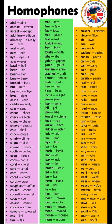Oftentimes homophones come in groups of two, like 'hour' and 'our', but occasionally they can be in groups of three — for example, 'two', 'to', and 'too'. Taking the 'bear' example further, we can add a third word: 'bear' (noun, large heavy animal with thick fur), 'bear' (verb, tolerate or endure), and 'bare' (adjective, naked or without clothes).